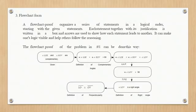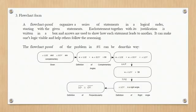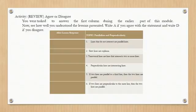The flowchart proof: Since angle LOE and angle EOV are complementary (given), then the measurement of angle LOE plus measurement of angle EOV equals 90 degrees (definition of complementary angles). Next, measurement of angle LOE plus measurement of angle EOV equals the measurement of angle LOV (Angle Addition Postulate). Then, the measure of angle LOV is 90 degrees (transitive property of equality). Then, angle LOV is a right angle (definition of a right angle). Finally, segment LO is perpendicular to segment OV (definition of perpendicularity).